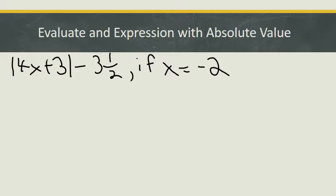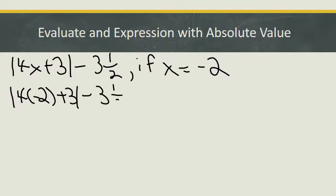So I'm going to drop my minus 2. I'm going to substitute minus 2 in here for x. So I've got the absolute value now of 4 times minus 2, plus 3, absolute value of that expression, minus 3½. The absolute value here represents a grouping, and so on the order of operations, I've got to solve within that first.